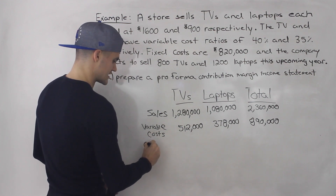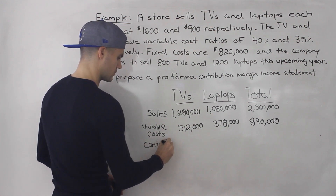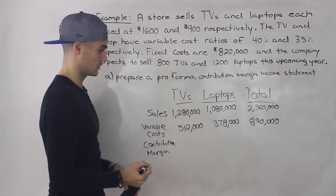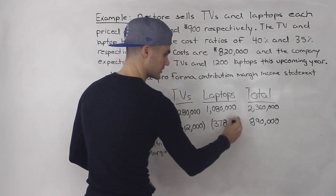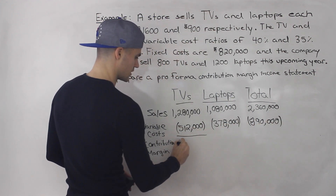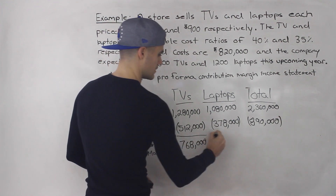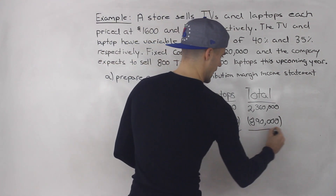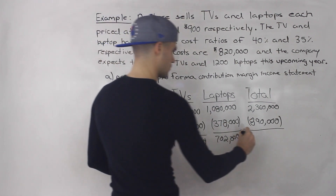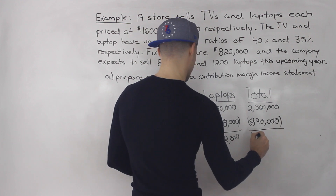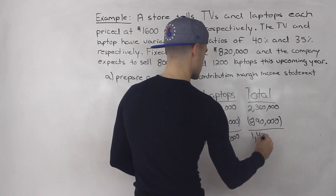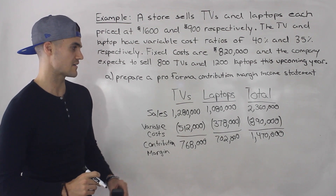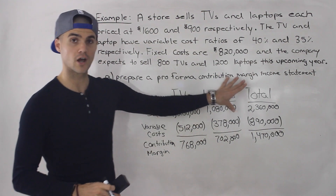Revenue minus variable cost gives us the contribution margin. So 1,280,000 minus 512,000 gives a TV contribution margin of 768,000. For laptops it's 702,000. The total contribution margin for the company as a whole is 1,470,000.